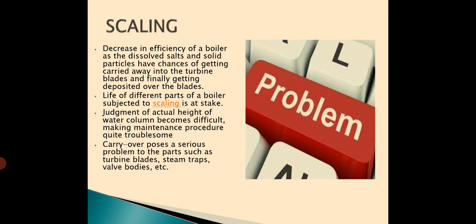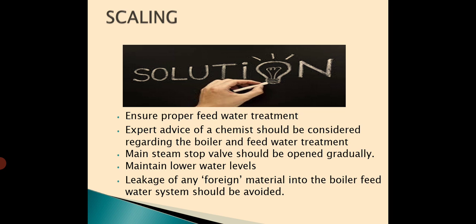Let us see the solution for scaling. First, we have to ensure proper feed water treatment and also go for expert advice of a chemist regarding the boiler and feed water treatment. We have to maintain lower water levels and the main steam stop valve should be opened very gradually. The leakage of any foreign material into the boiler feed water system should be avoided. In the initial stage, if you are able to find out the presence of scales inside the boiler, you may remove it by acid washing or using a wire brush or a scrubber or by using thermal shocks. These are some of the removal methods.